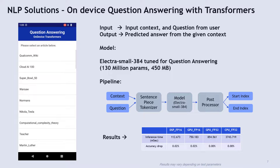The first NLP solution is On-Device Question Answering with Transformers. In this solution, the application populates a set of contexts. Context is nothing but a paragraph with a title. The user can ask questions that are related to the context. The output of the solution is the predicted answer for the given question. The model used in this solution is Electra Small 384, which is tuned for question answering. The pipeline used in this application is shown on the screen. When this model is run on DSP, it is much faster than CPU. We could clearly see the runtime difference between CPU and DSP highlighted at the bottom of this slide.